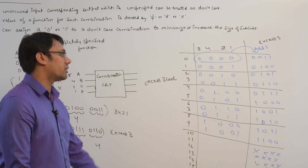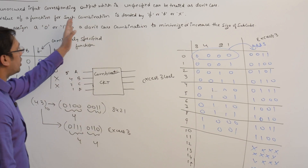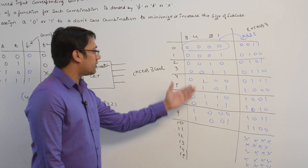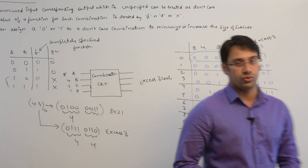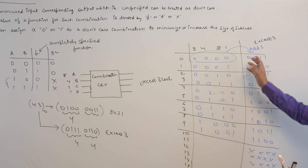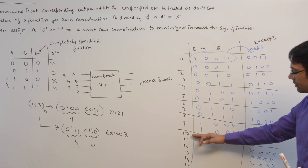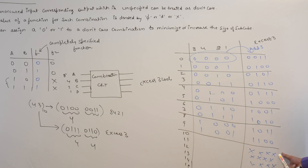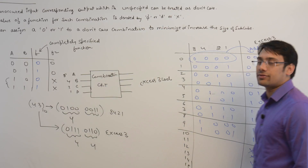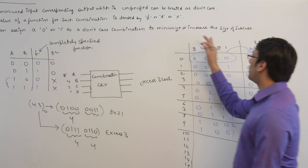Such combinations are called don't care combinations, and we can assign any value to them. By definition, an input whose corresponding output is unspecified can be treated as don't care. In this example, the 8421 code represents decimal digits 0 to 9 only — digits 10 to 15 are not represented. Therefore for combinations 10 to 15 the function is not specified, and for such values we assign a don't care. The value of such a function is noted by Phi, D, or X.